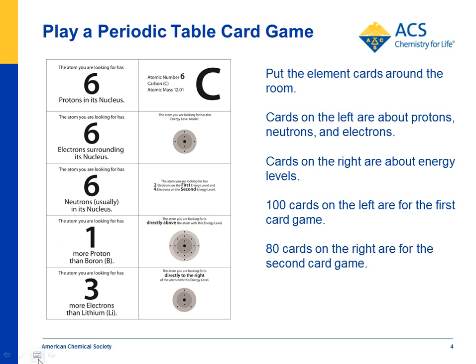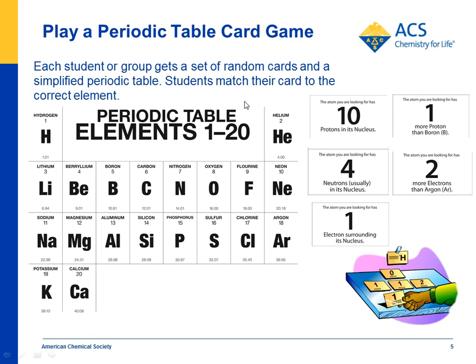So how do you play? You would take the element cards and put them around the room — there'd be 20 element cards around the room. Students look at their card and try to find where it goes. For example, this card says the atom you're looking for has 10 protons in the nucleus. The student should know that the number of protons in the nucleus is the same as the atomic number, so they would look for an element with atomic number 10, which is neon, and put this card in the neon pile.